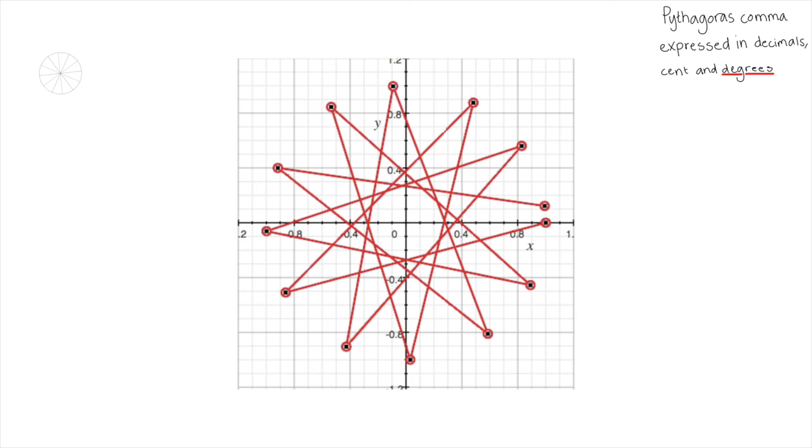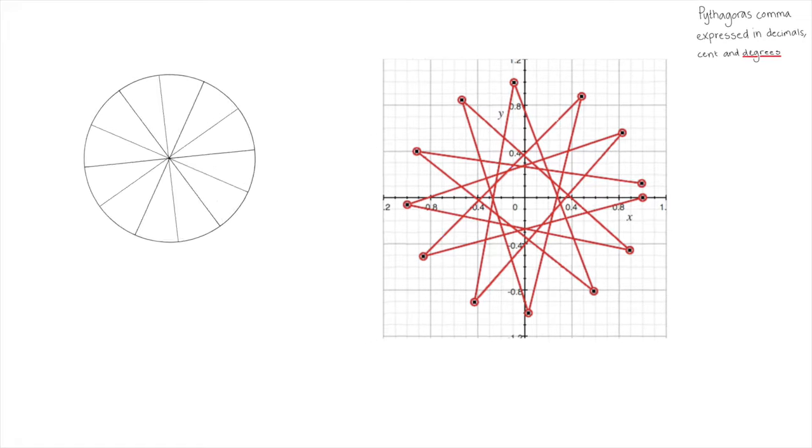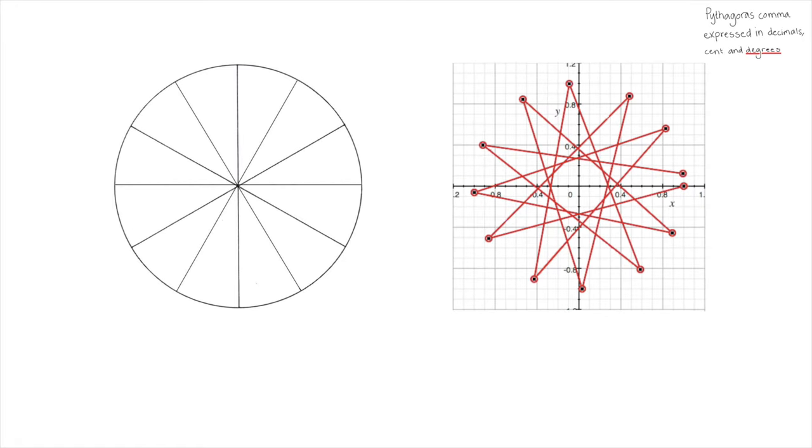But how do you calculate this? Well, this angle of rule is 7 degrees is 23.46% of 30 degrees. And how do you know the gap is 30 degrees? Well, it's pretty logical actually. If you divide the whole circle's degrees, which is 360, with the 12 tones, the simple answer is 30 degrees.